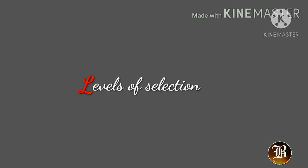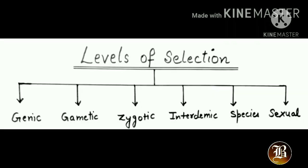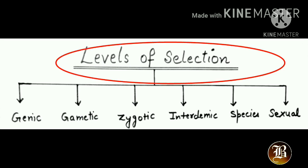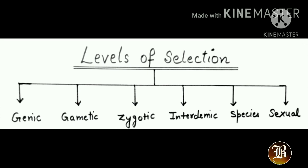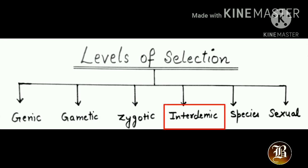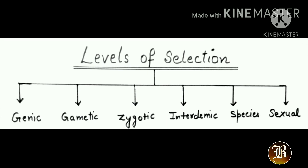Let's start with our topic: levels of selection. We have different types of selection. First is genic selection, at the gene level. Next is gametic selection, where gametes are selected. Then zygotic selection, selection of a particular zygote. Next is interdemic selection, meaning selection of deems or populations. Then species selection, selection of a particular species. Last is sexual selection, where one particular sex is selected by the other for mating. Let's understand these different levels one by one.